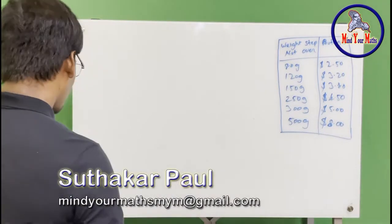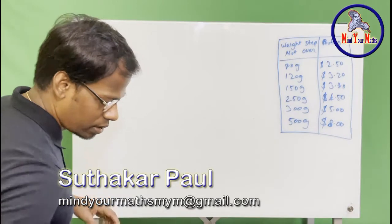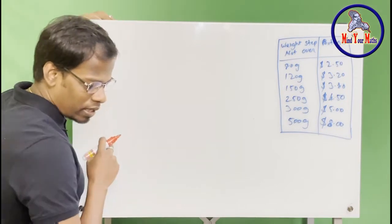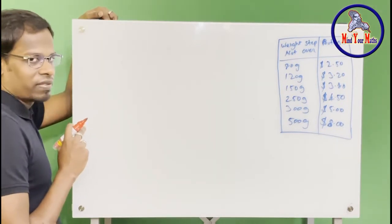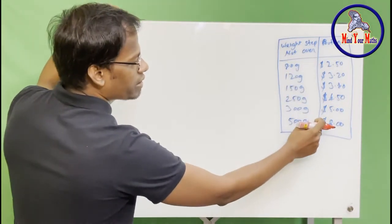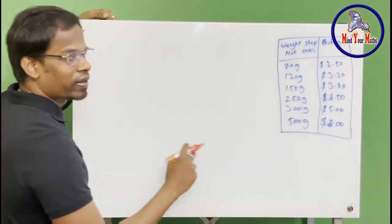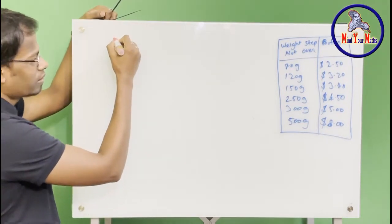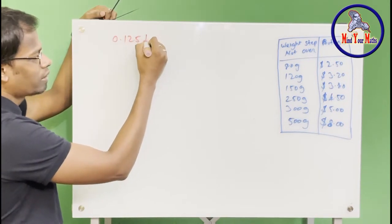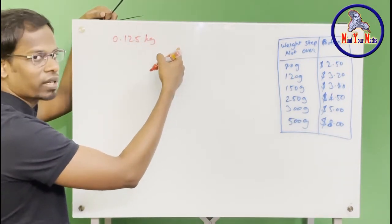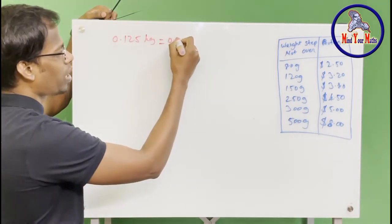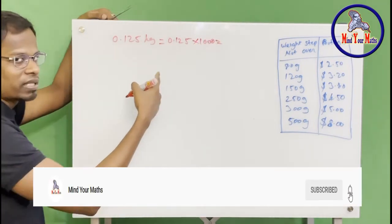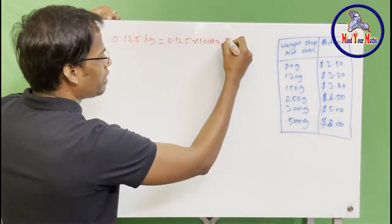Let's write down what is given in the problem, but we will convert everything into grams first. In this table, everything is given in grams, so we will convert all the numbers. First, 0.125 kilograms — to convert that into grams we do 0.125 times 1000, since 1000 grams equals one kilogram.